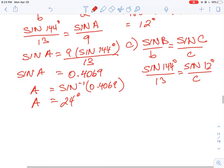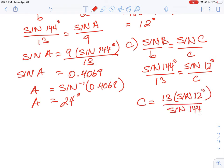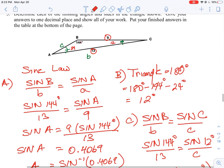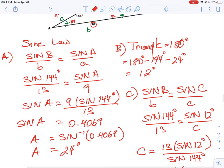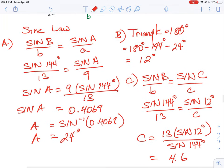There's two trig functions in here, but we're going to cross multiply them. So I need to bring C to the top and sine 144 to the bottom, and then 13 to the top. So you're going to end up getting 13 times sine 12, and then move sine 144 to the bottom. And when we work that out, and again make sure your trig functions are in degrees, you should get approximately 4.6. So 4.6 is the missing distance for side C.